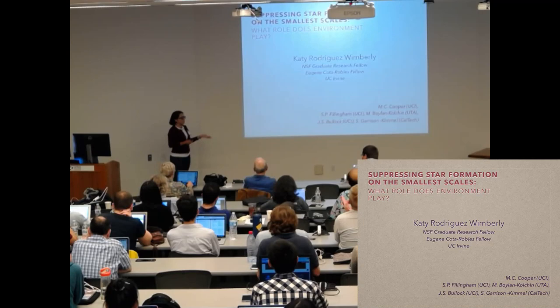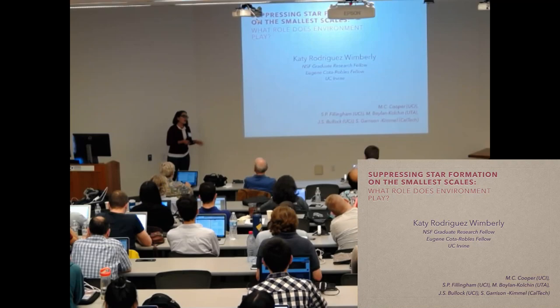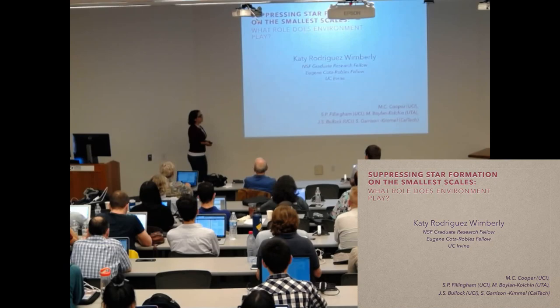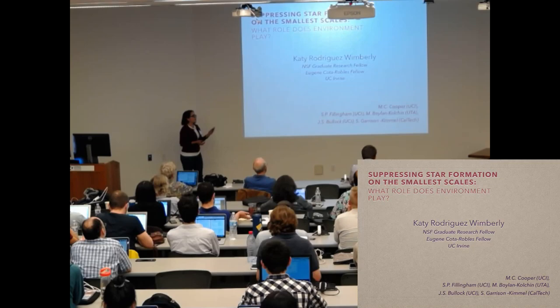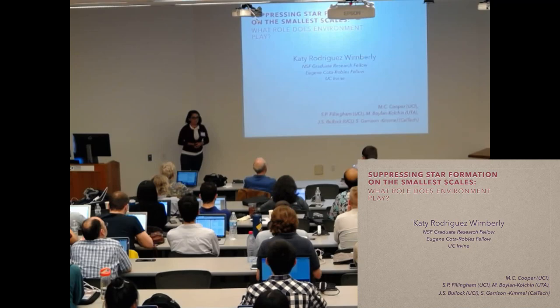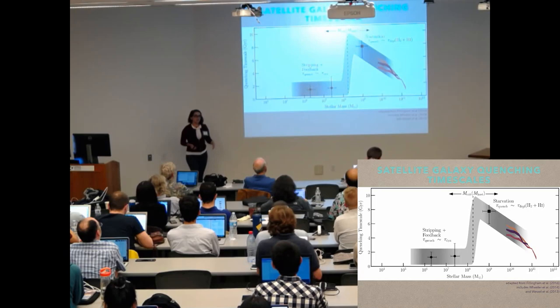Today I'll be talking about, similar to what Susan was talking about, suppression of star formation, but I am focusing on the smallest of satellite galaxies and specifically looking at the role that environment played in their suppression. This is work that I did and just submitted the paper with my advisor Mike Cooper, along with my other collaborators Sean Fillingham, Mike Boylan-Colchin, James Bullock, and Shea Garrison-Kimmel.